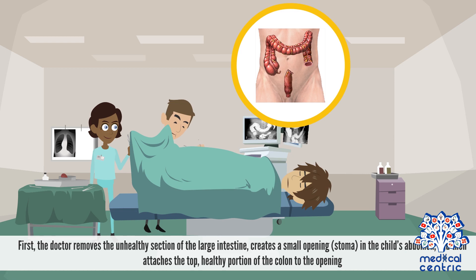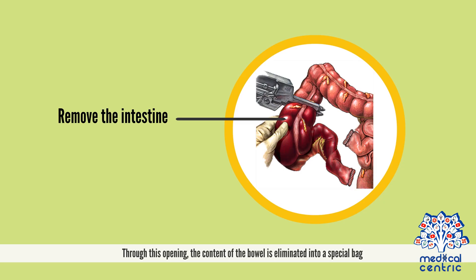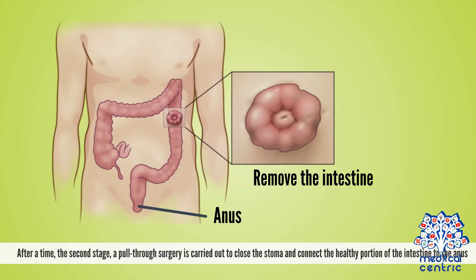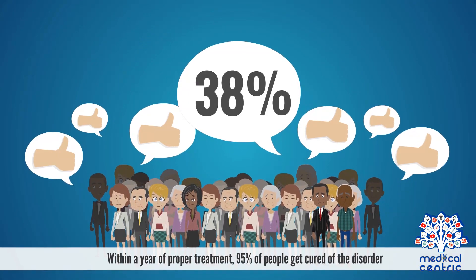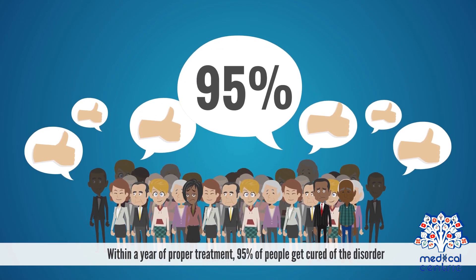Ostomy surgery is done in two steps. First, the doctor removes the unhealthy section of the large intestine, creates a small opening or stoma in the child's abdomen, and attaches the top healthy portion of the colon to the opening. Through this opening, the contents of the bowel are eliminated into a special bag. After a time, a pull-through surgery is carried out to close the stoma and connect the healthy portion of the intestine to the anus. Within a year of proper treatment, 95% of people are cured of the disorder.